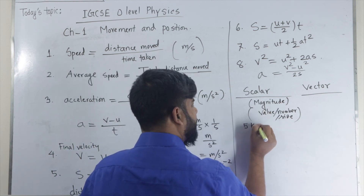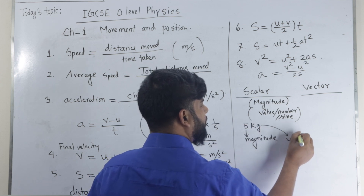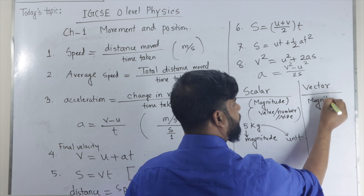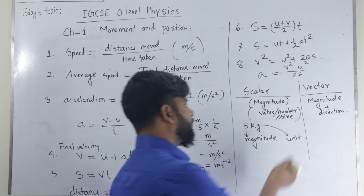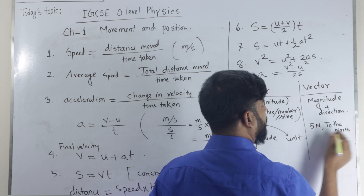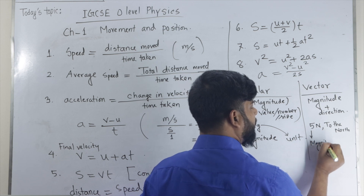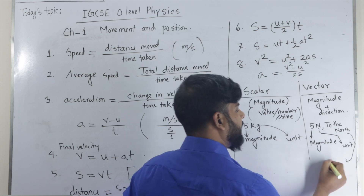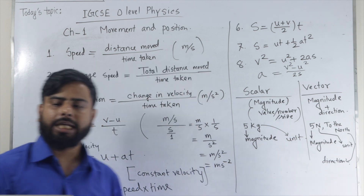For example, 5 kg — here 5 is the magnitude and kg is the unit. On the other hand, to express a vector quantity, we need magnitude and direction. Without direction, we cannot express a vector quantity. For example, 5 newtons to the north direction — 5 is the magnitude, N is the unit, and 'to the north' is the direction. To express a vector quantity, we need that extra thing: direction.